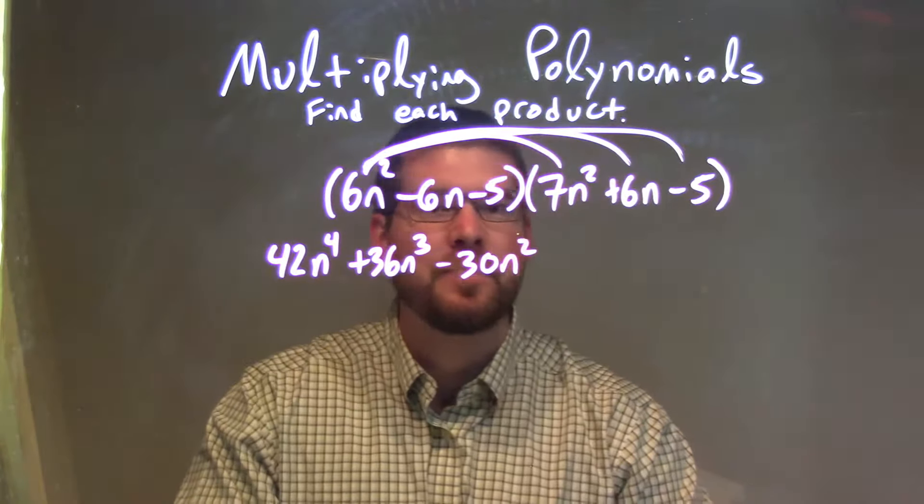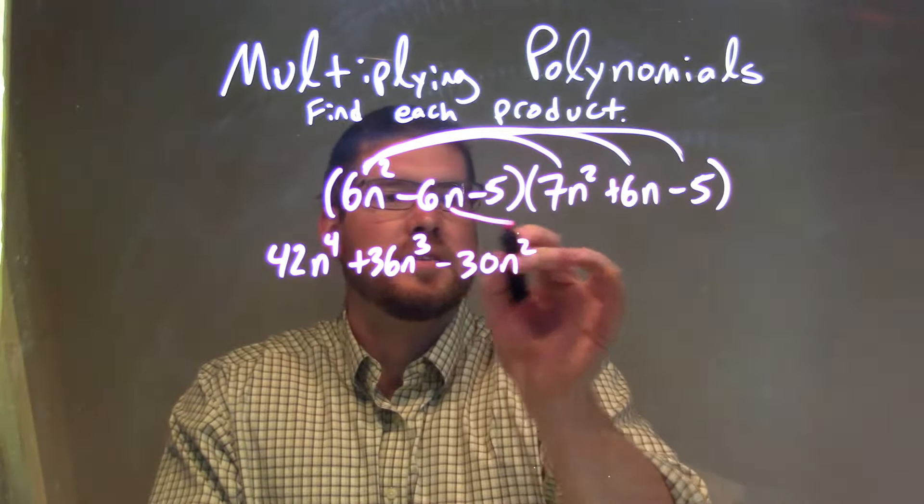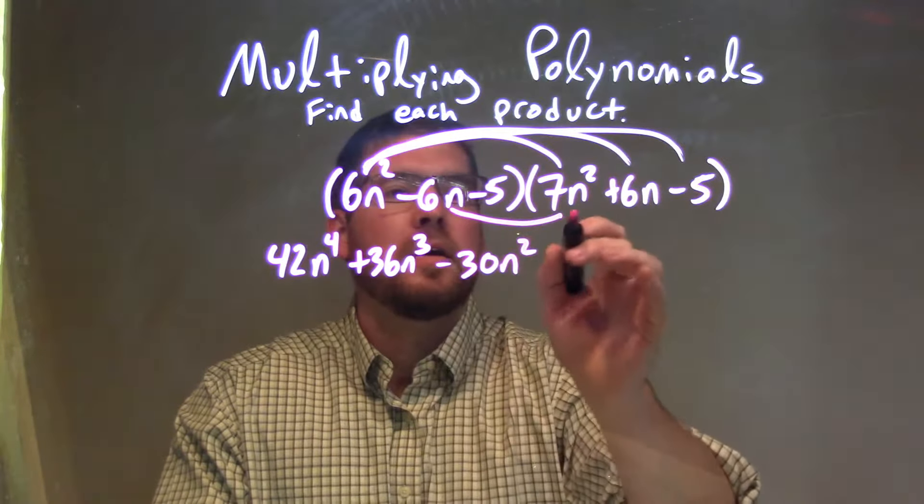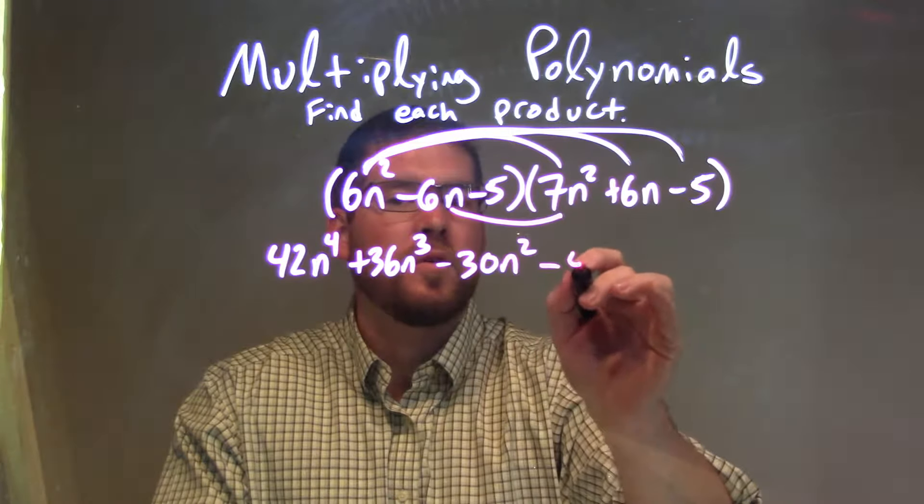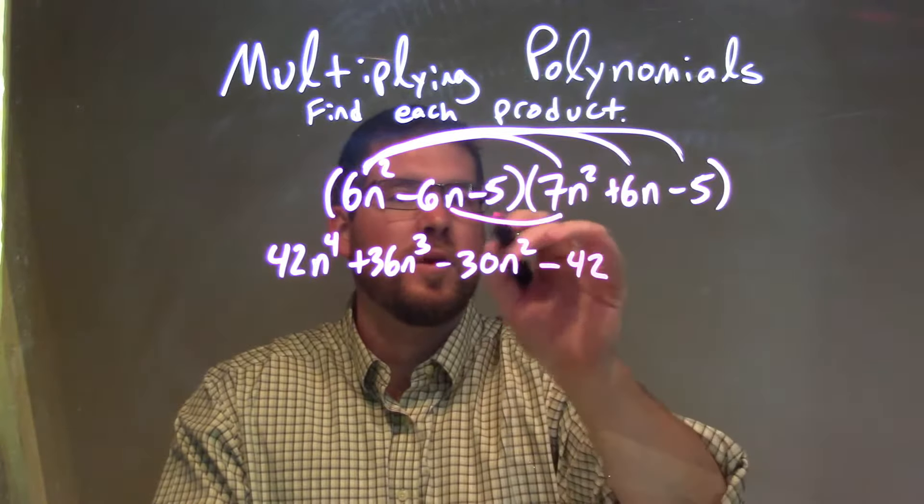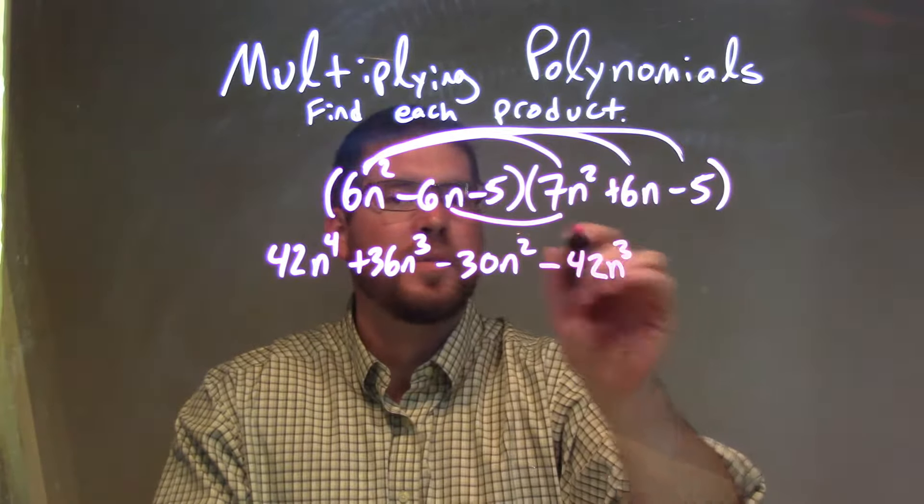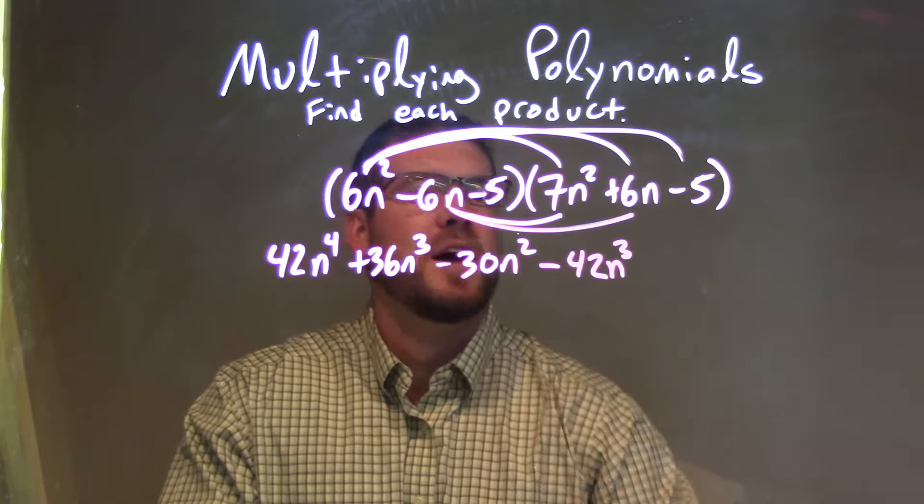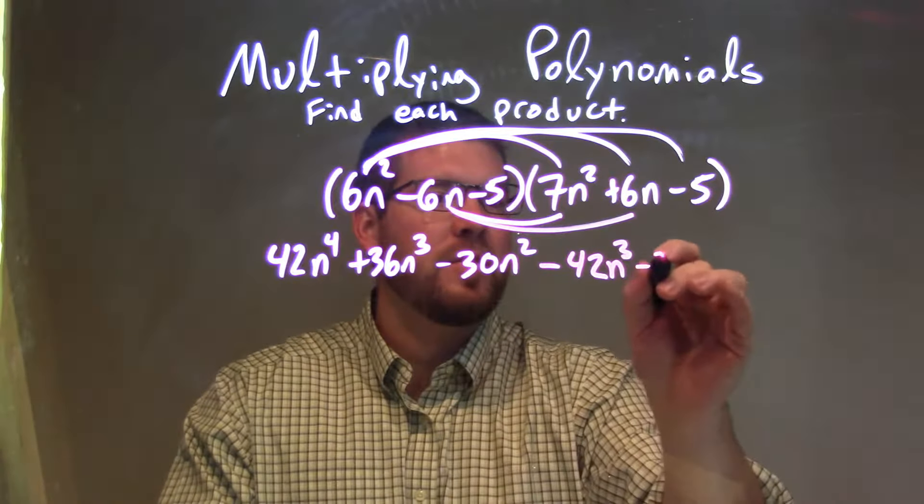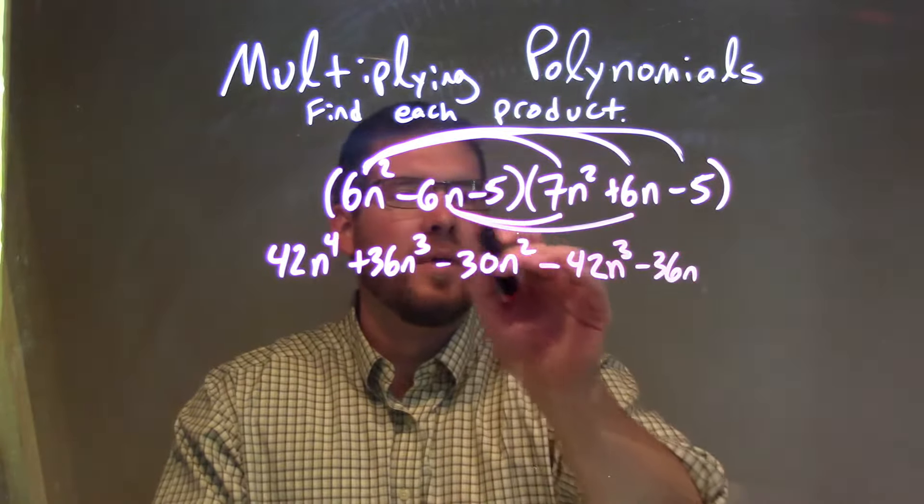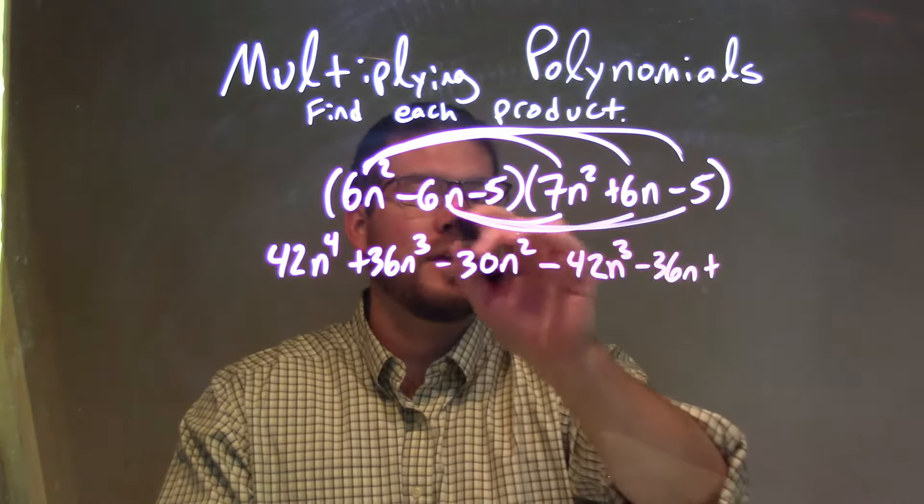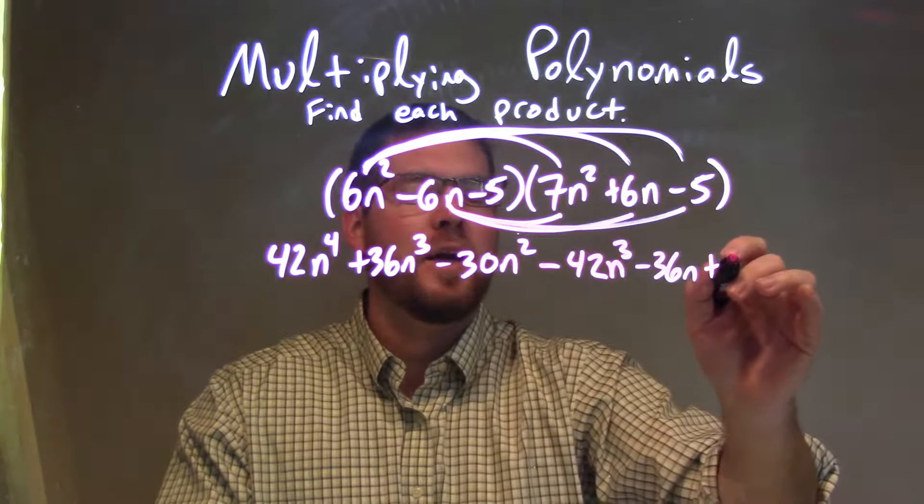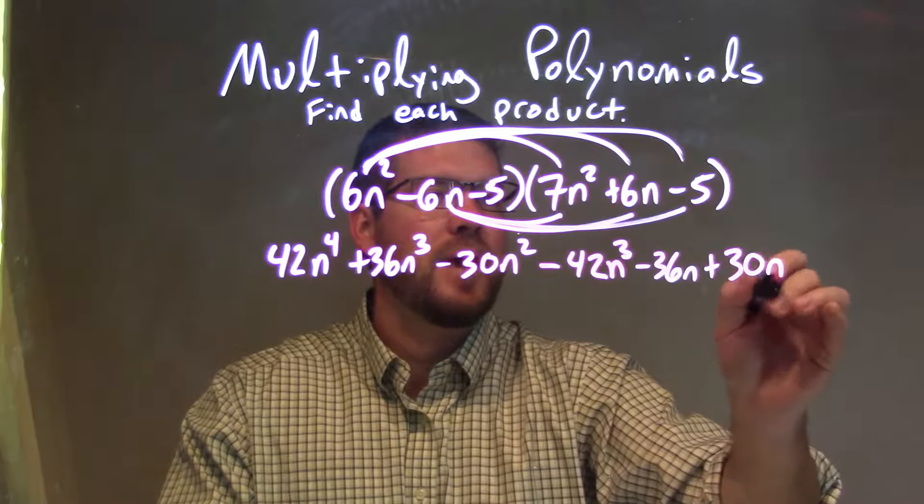So let's deal with the minus 6n. Minus 6n times a 7n squared is a minus 42n to the third power. Minus 6n times a 6n is a minus 36n. And minus 6n times a minus 5 is a positive. A negative times a negative is a positive. A positive 30n.